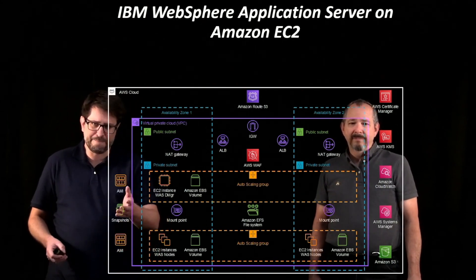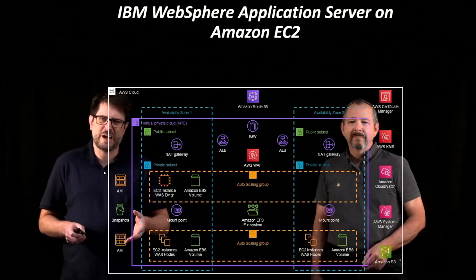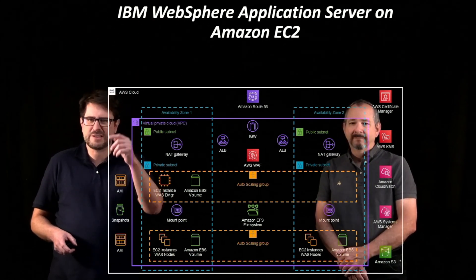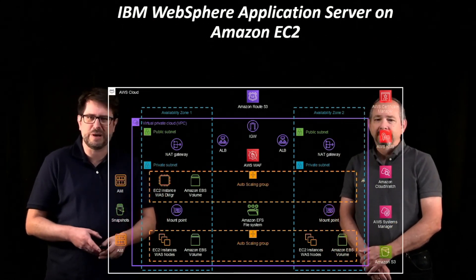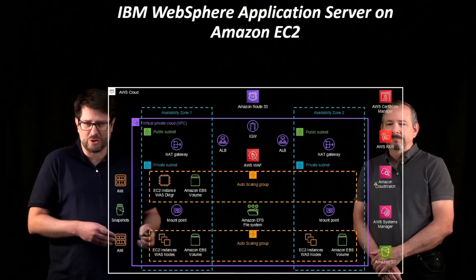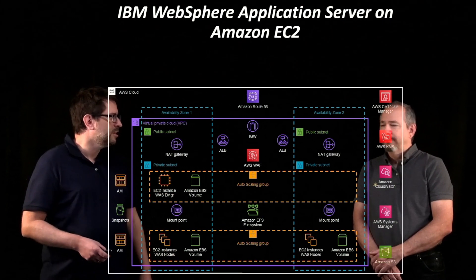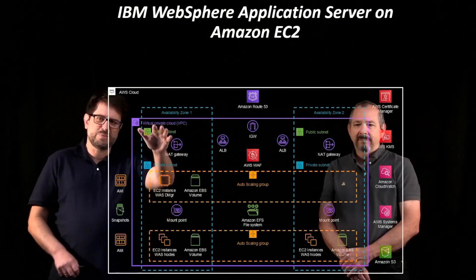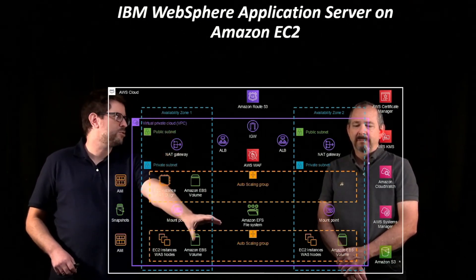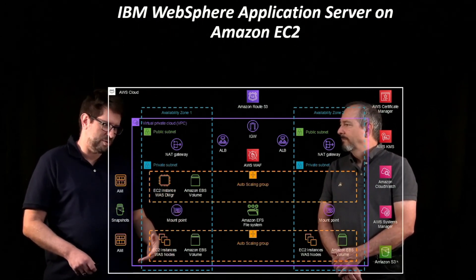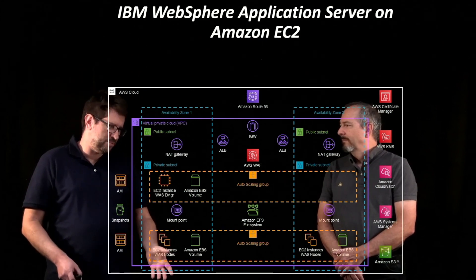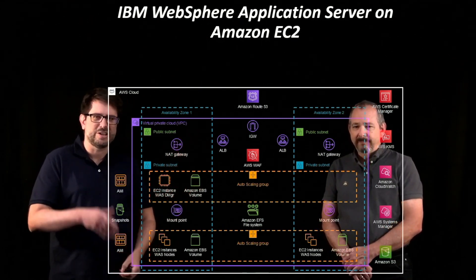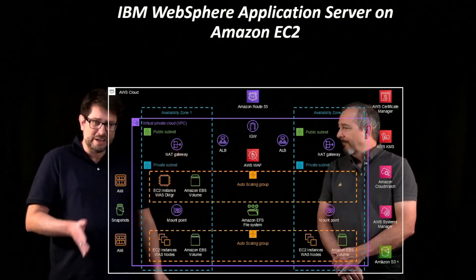The other thing customers can do is replace components. WebSphere usually comes with the IBM HTTP Server, so if customers want to simplify the deployment when they bring to AWS, they can easily replace IHS, the IBM HTTP Server, with an application load balancer. And if they're running static content on IHS, they can use Amazon S3 to host static content for their websites. The reason you see two ALBs here is so customers can separate traffic from the Deployment Manager to the actual applications — SREs and SysOps teams can go through different routes to reach the Deployment Manager, while customer traffic reaches the applications through the WebSphere nodes.